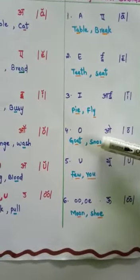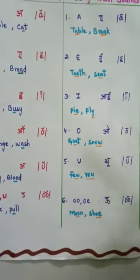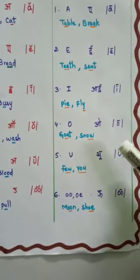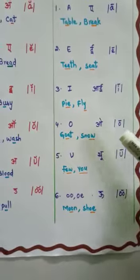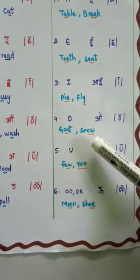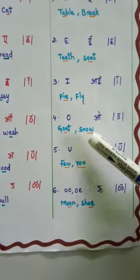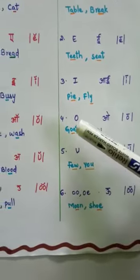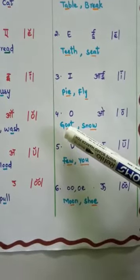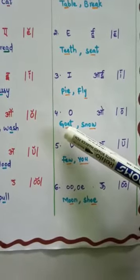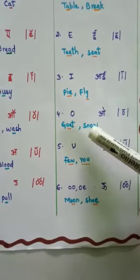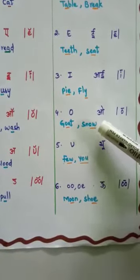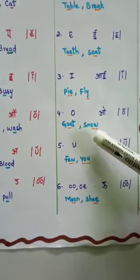Next is O. O makes the sound /oʊ/. Examples: goat and snow. In goat, O-A makes the sound /oʊ/. In snow, O-W makes the sound /oʊ/ — snow.